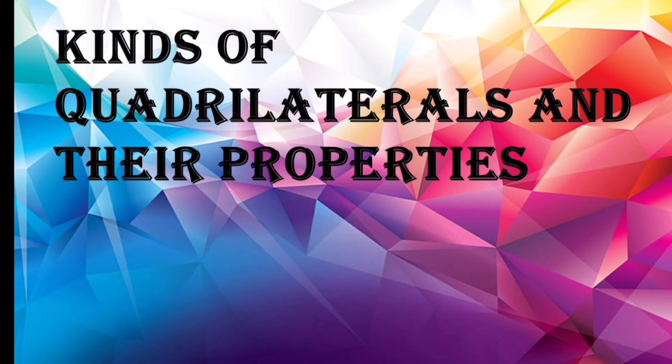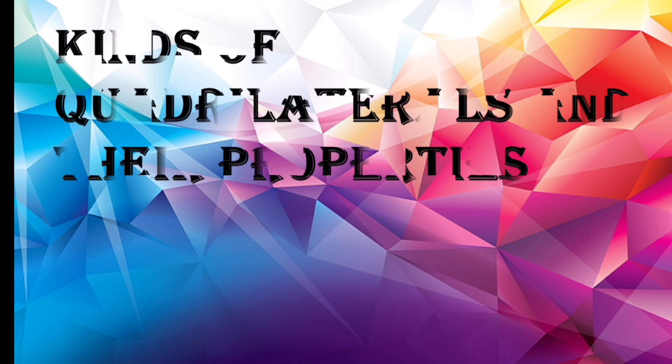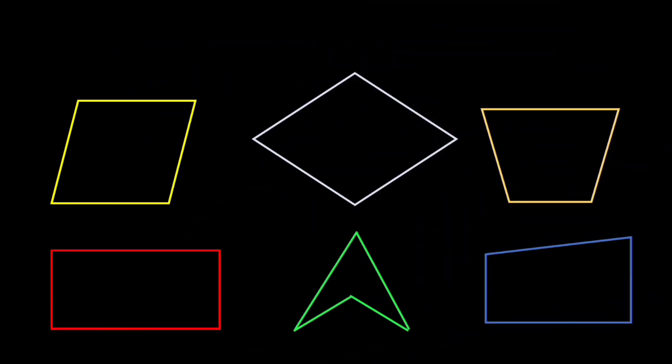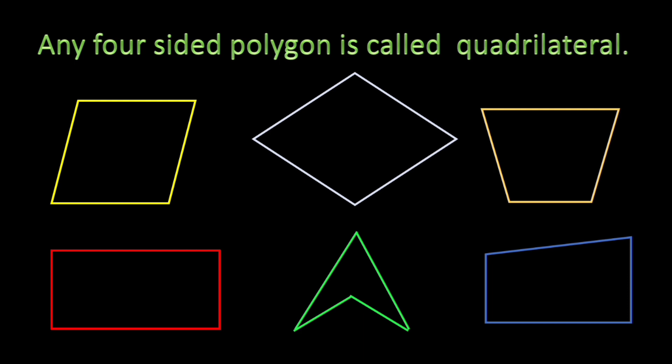In this period we are going to learn different kinds of quadrilaterals and their properties. So what are quadrilaterals? All these figures are quadrilaterals. Any four-sided polygon is called a quadrilateral. We have to learn some special quadrilaterals.